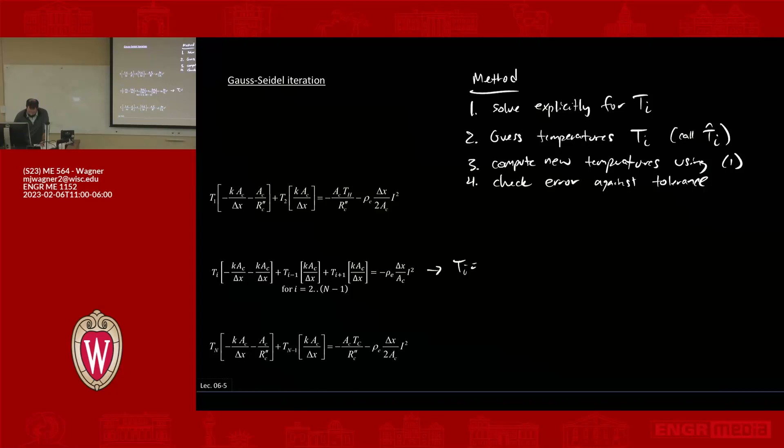So solving this for Ti would yield something like the following. We have Ti equals, in the numerator, a bunch of stuff: rho e delta x over a c i squared plus Ti minus 1 times k a c over delta x plus Ti plus 1 times k a c over delta x. And in the denominator, I have 2k a c over delta x. So this is going to be for i equals 2 to n minus 1. We would do the same thing for 1 and n, but I'm lazy, so let's not do that.